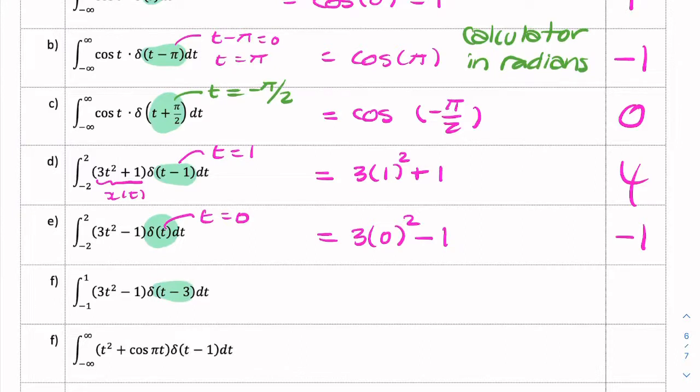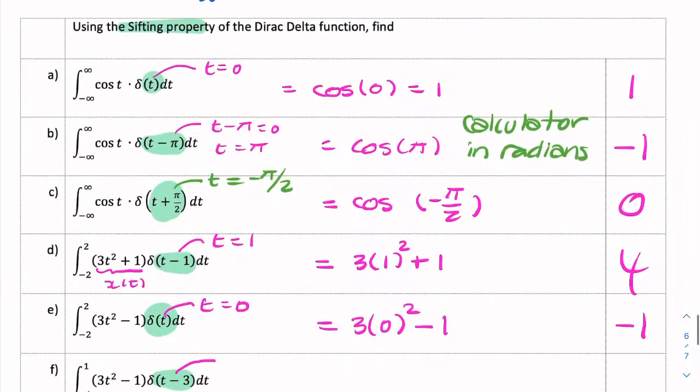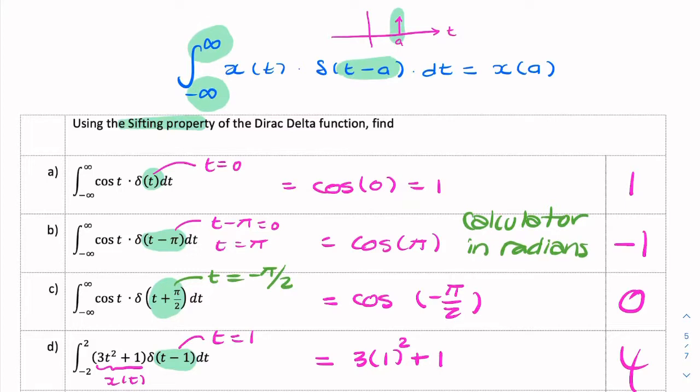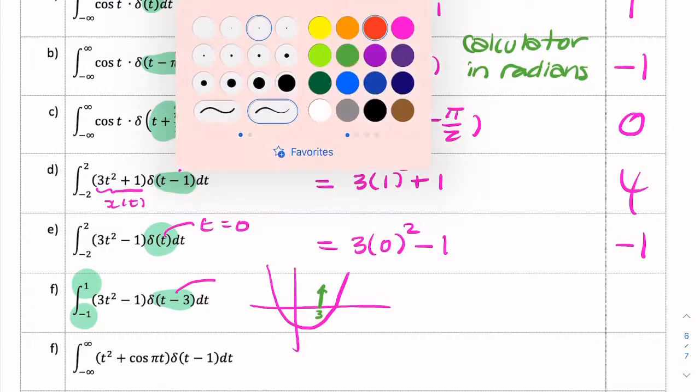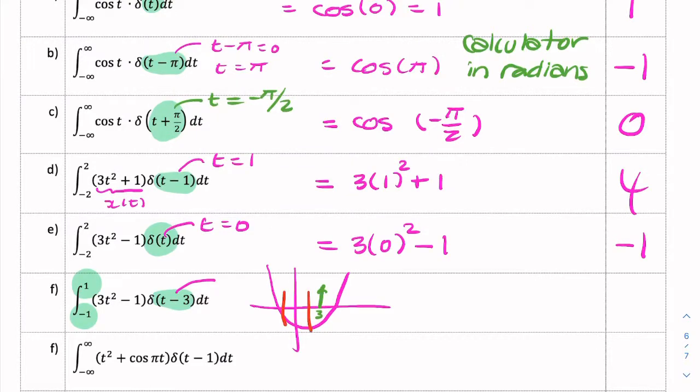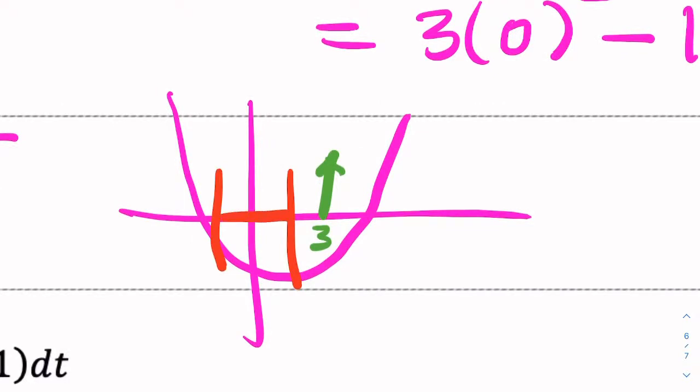So you see, they're all very similar. What we do is we notice, so important to notice that the limits of the integration have to include the impulse function. So here, this example is very similar to the previous example, but notice the limits of integration from minus 1 to 1. So you have 3t² minus 1, which maybe looks something like this. And then you have an impulse centered at t equals 3, so that's your impulse at t equals 3. But we're only integrating from minus 1 to 1, so we're only integrating from here to here.